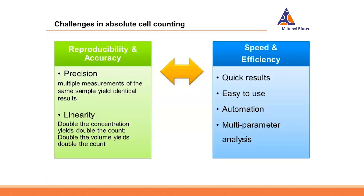The other thing is linearity, which means in our case, if we have twice the number of cells in the sample, we expect to also count twice the number of cells. That doesn't necessarily mean there is no systematic error — we could only count 90% of cells rather than 100%. If these two properties are given, then to achieve good accuracy one probably has to cross-validate against a different technology, which we will discuss later.